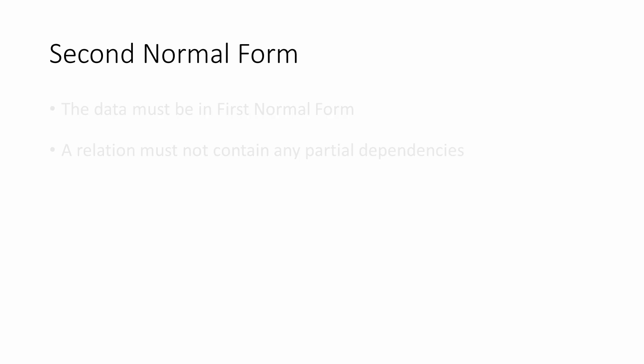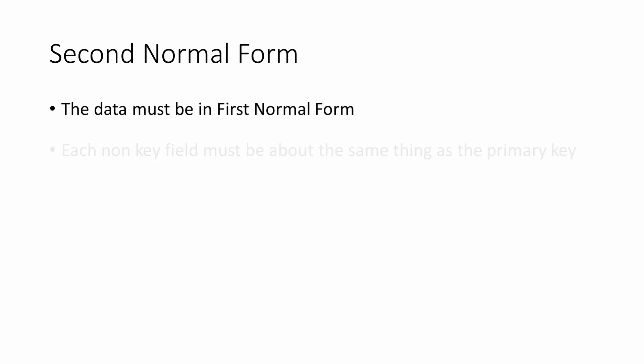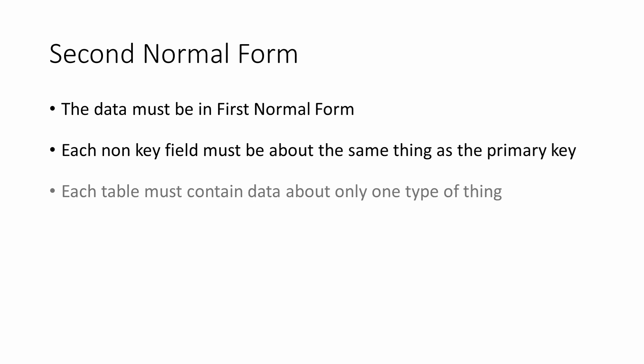What this means is that the data must be in first normal form, and each non-key field must be about the same thing as the primary key. Also, each table must contain data about only one type of thing.